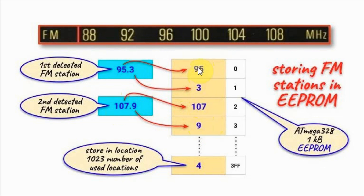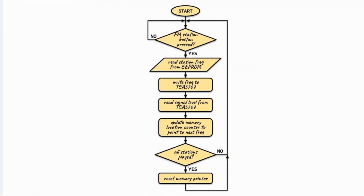In this example, four memory locations are used. We also store the value four in another memory location because it will be used later when we read and play the FM stations. After storing FM stations in EEPROM, we press the FM station button to begin playing. Each button press reads the station frequency from memory, writes it to the module, reads the signal level, and updates the location counter to point to the next frequency. This continues until all stations have been played, then the memory pointer resets and the process starts from the beginning.